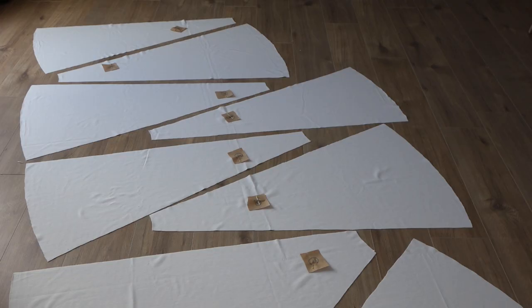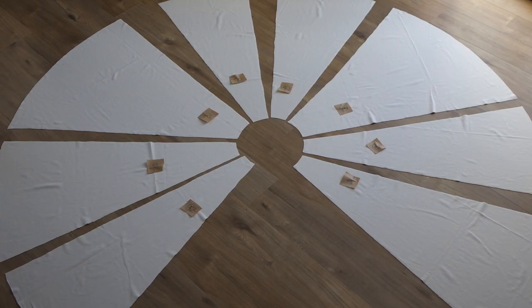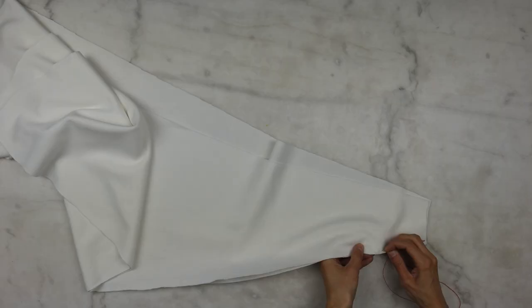Let's start with the two first pieces. Place them right sides together and baste them quickly with a contrasting thread that will be easier to remove. Basting is never a waste of time. The true waste of time is to unstitch two pieces hastily sewn together.